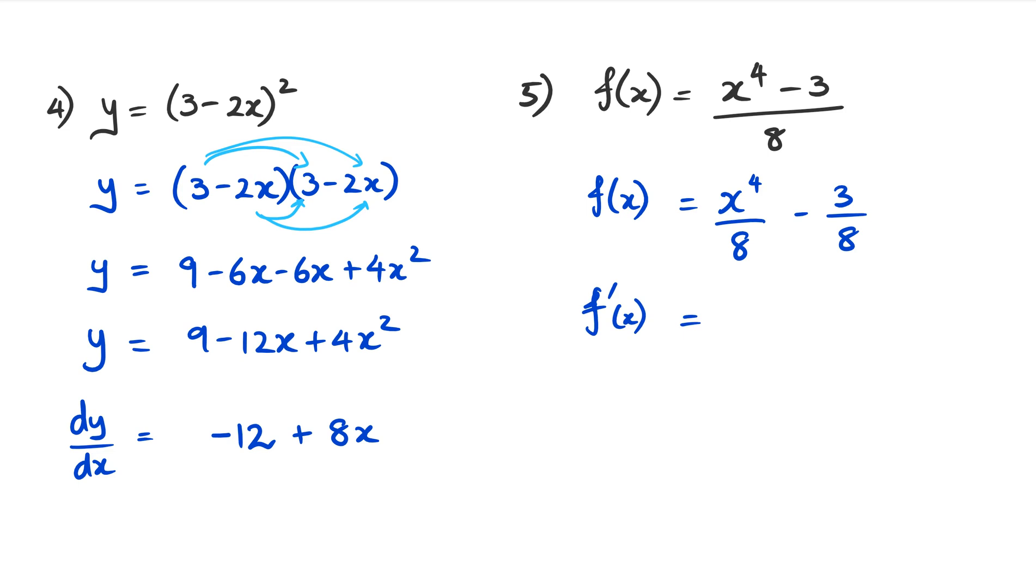So that means we bring the power down in front of x, so it's going to be 4 times 1 which is just 4. If you're wondering where I got that 1 from, remember that it is 1x to the power of 4. So that means I've got 4x, and then 4 take away 1 is 3, so the power goes down to 3, and that's divided by 8. Now because I've got negative 3 over 8 and it's a constant, it's a number by itself, when I differentiate it it will become 0. So don't have to worry about it, and we just leave it as it is. Now as for the 4 and 8, I can simplify this further, and I can rewrite this as x to the power of 3 over 2.